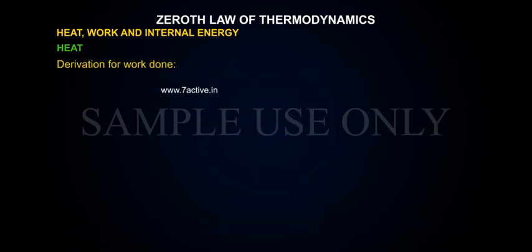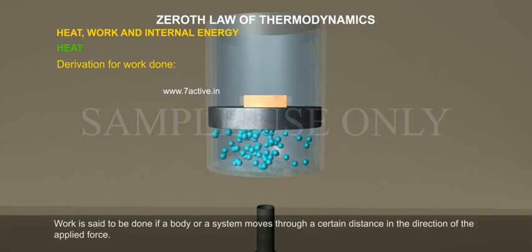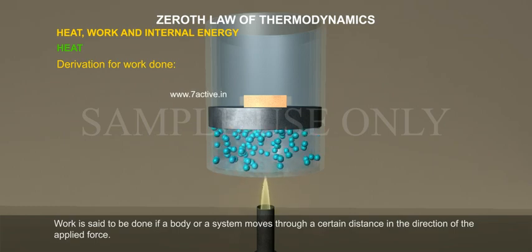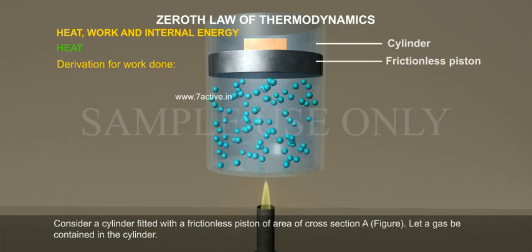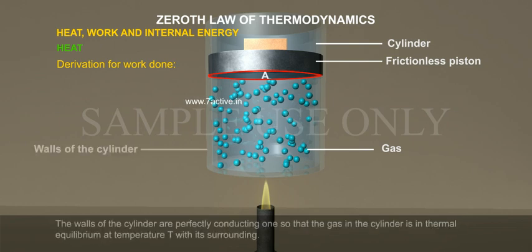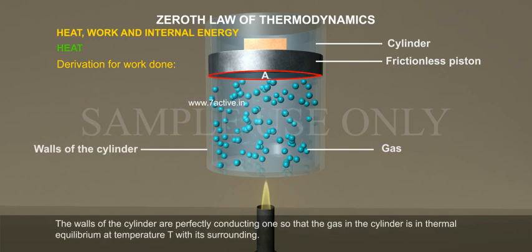Derivation for work done. Work is said to be done if a body or a system moves through a certain distance in the direction of the applied force. Consider a cylinder fitted with a frictionless piston of area of cross section A. Let a gas be contained in the cylinder. The walls of the cylinder are perfectly conducting so that the gas in the cylinder is in thermal equilibrium at temperature T with its surrounding.